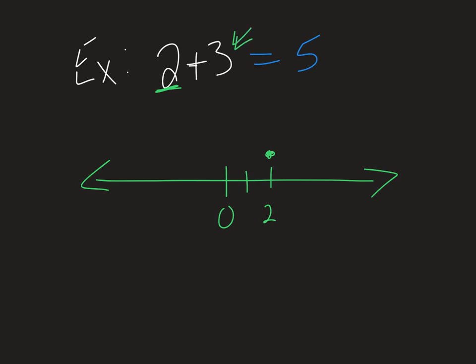Now the idea is, it's positive, so it's going to move to the right. So I'm going to go over, 1, 2, 3, ending at 5.